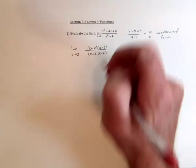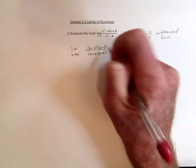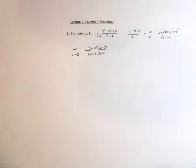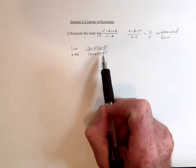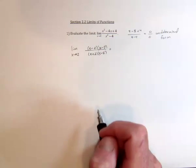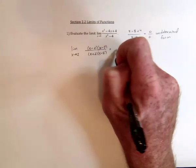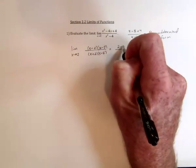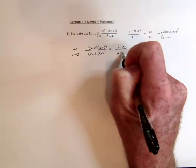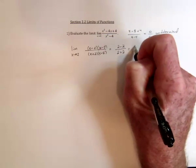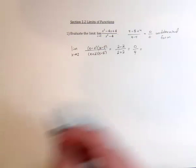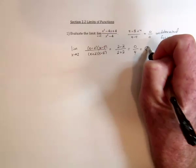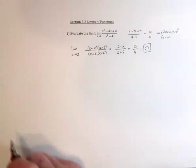And then the (x - 2) can be canceled, and hopefully the trouble that we were having just got canceled. So try it again — now substitute the number in again. Substitute in a 2, and we get 2 minus 2 for the numerator and 2 plus 2 for the denominator. So that's going to be 0 divided by 4, and 0 divided by 4 is equal to 0. And so that would seem to be the answer.